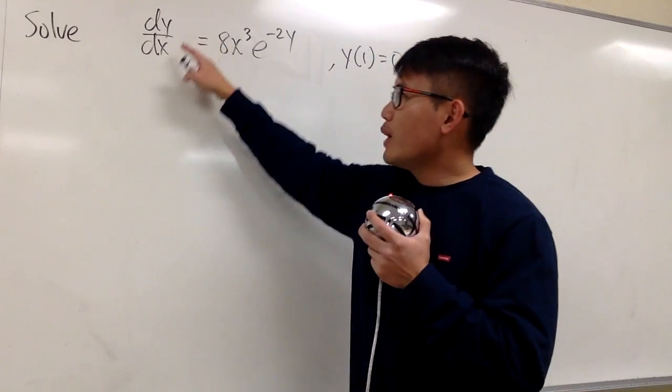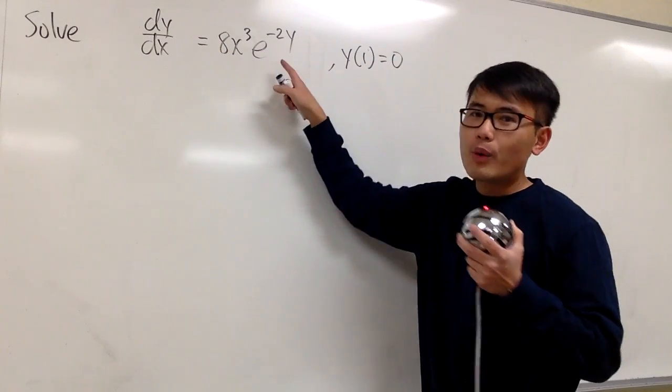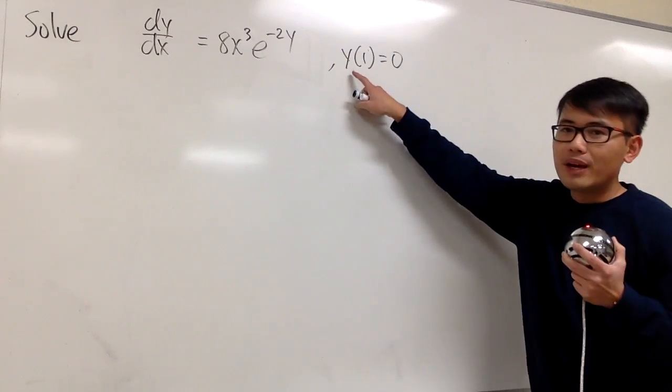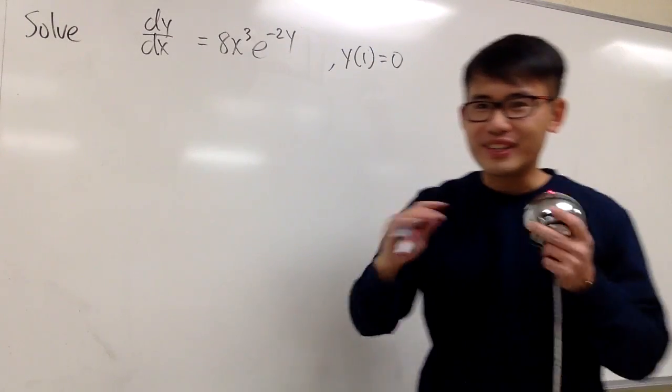Let's solve this differential equation. We have dy/dx is equal to 8x to the third power times e to the negative 2y power. And we also have y(1) = 0, so be sure to solve for the constant.